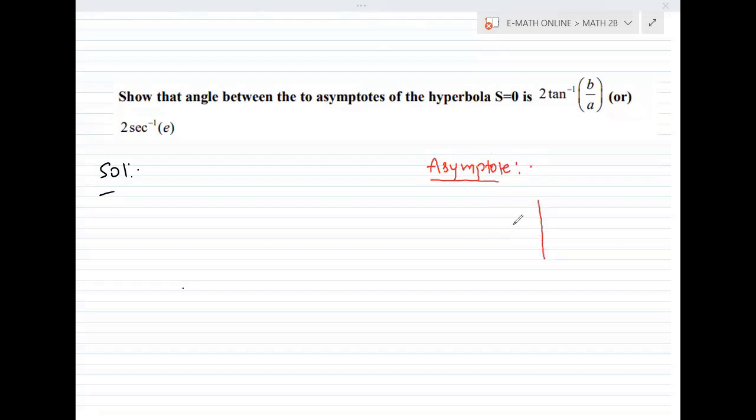Asymptotes—consider this hyperbola. At an infinite point where it touches, tangents are called asymptotes. Like this: tangents at infinity touching the curve, those tangents are called asymptotes.